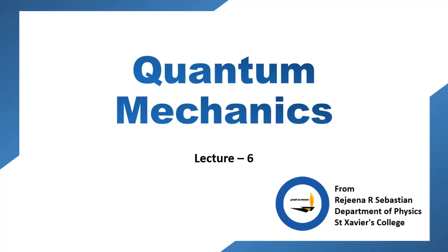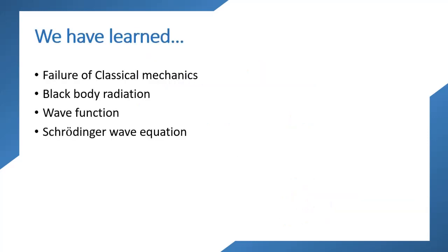Hello dear student, welcome to another lecture in quantum mechanics. This is lecture number 6. So far we have learned about the failures of classical mechanics which led to the evolution of quantum mechanics. We have learned about blackbody radiation spectrum. We have also learned about wave function and its importance, and how to analyze the evolution of a wave function using the Schrodinger's time-independent and time-dependent wave equations.